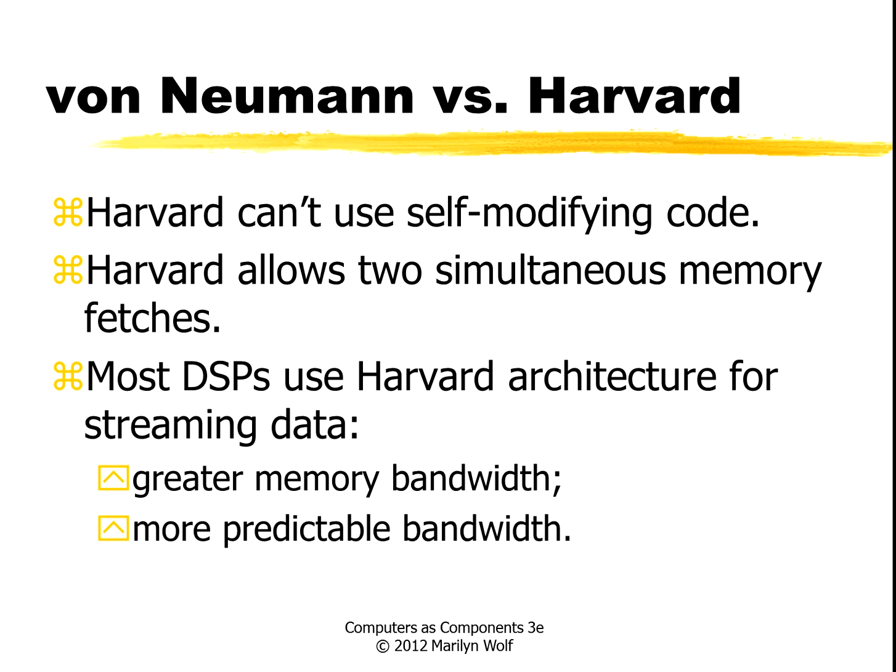A von Neumann machine can write any kind of data to a location, set the program counter to that location, read that data back in, and execute it. In a Harvard architecture, the data and program are separate. But the Harvard architecture allows two simultaneous fetches — one to the instruction memory and one to the data memory — providing greater memory bandwidth and more predictable bandwidth with less interference between the two. Harvard architectures are often used in digital signal processors, or DSPs.